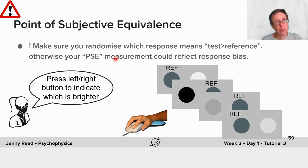Obviously, it's important if you're doing an experiment like this to randomise which response, like the left button press or the right button press, corresponds to test greater than reference. Because otherwise, when you think you're measuring point of subjective equivalence, you might actually be measuring a response bias.